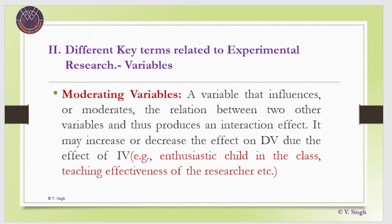Another category is moderating variables — variables that influence or moderate the relation between two other variables, producing an interaction effect. They may increase or decrease the effect of the independent variable on the dependent variable. In our example of studying activity-based learning on student achievement, if students are enthusiastic about science, their achievement may increase. If students are disinterested, achievement tends to be lower. Similarly, if the teacher has very high teaching effectiveness, students will achieve higher. These moderating variables need to be studied in relation to the independent and dependent variables.